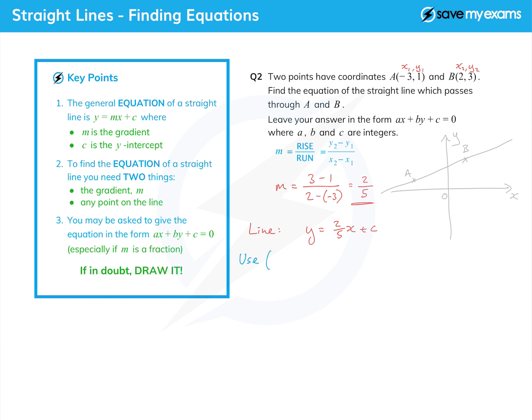I'm going to use point B because I prefer to work with positive numbers, although it doesn't really make any difference—you can use either and you will get the same answer. So y is 3, x is 2, so that's two fifths times 2 plus c. So to get c on its own, I'm going to subtract four fifths from both sides.